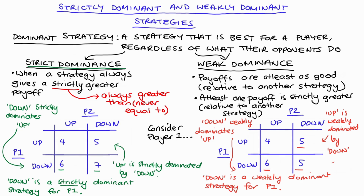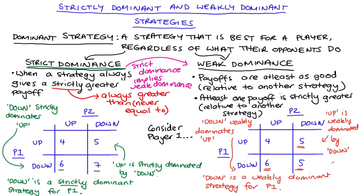It's worth noting that strict dominance actually implies weak dominance. Turning back to the left-hand game: we described down as strictly dominant for player one, but down also fulfills the requirement of being weakly dominant — it is at least as good as up, never less, and strictly greater in at least one case (in fact in all cases). So down is also a weakly dominant strategy in addition to being a strictly dominant strategy. In practice though, the interesting and more informative thing to say about that game is that it's a strictly dominant relationship.